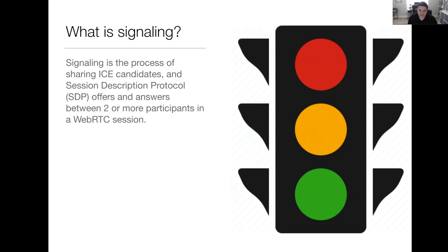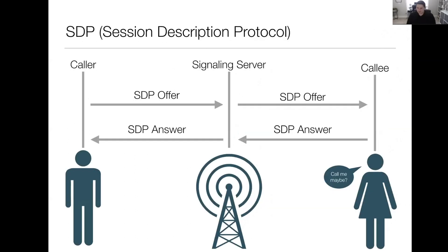We'll start off with SDP offers and answers. SDP, or Session Description Protocol, as the name would suggest, describes information about the session. That information might include the name of the session, what codec should be used for audio and video, who started the session and when, and lots of other metadata. The SDP is split up into two parts: the offer and the answer. The local peer creates an SDP offer and sends it to the remote peer. The remote peer creates an SDP answer if it agrees to answer the call and then sends it back to the local peer. This is the basics of the SDP handshake.